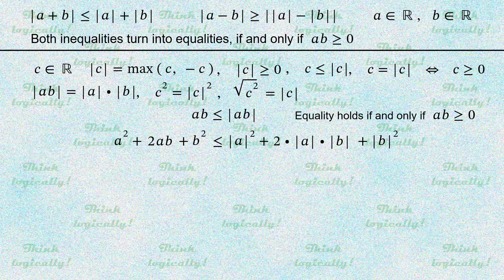You've certainly guessed what is going to be next. Indeed, we rewrite the inequality as the sum of a and b squared is not greater than the sum of moduli of a and b squared.